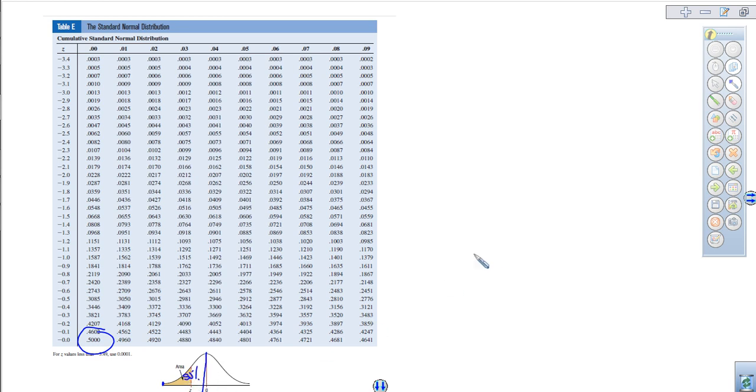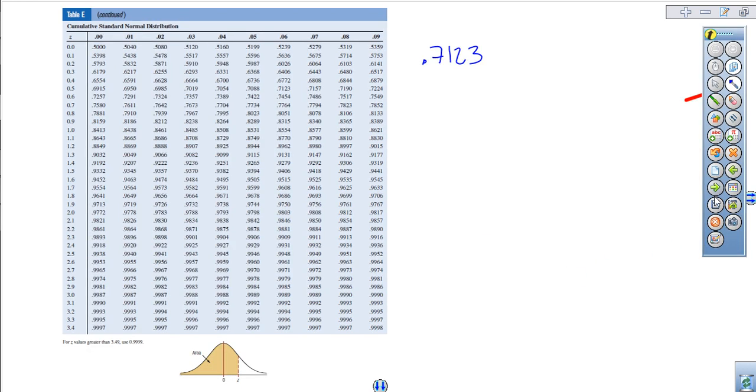Well, remember, I'm looking for 0.7123. So that's not going to occur in this table because I'm looking for something greater than the mean. So we come to the positive side. You'll notice here that the smallest percentage is 50%. Because if I came just to the mean, that means that I'm 50%.